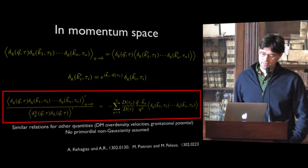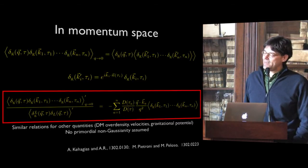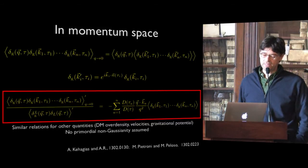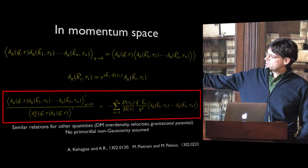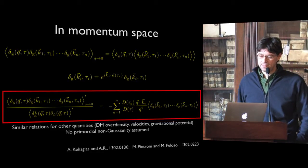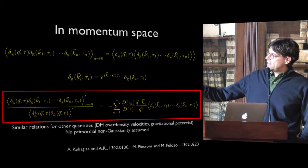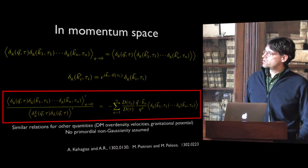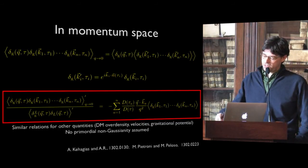Going to momentum space, you can rewrite this consistency relation in a simple way. It tells you that any (n+1)-point correlator, as long as one of the modes goes to zero — i.e., it is a long wavelength mode — has a very well-defined relation with the n-point correlator at short scales. This relation is exact and does not require any knowledge of the short-scale physics. You can write down similar relations for the overdensity of dark matter, for the galaxy overdensity which is what we observe, and for the velocity and gravitational potential.